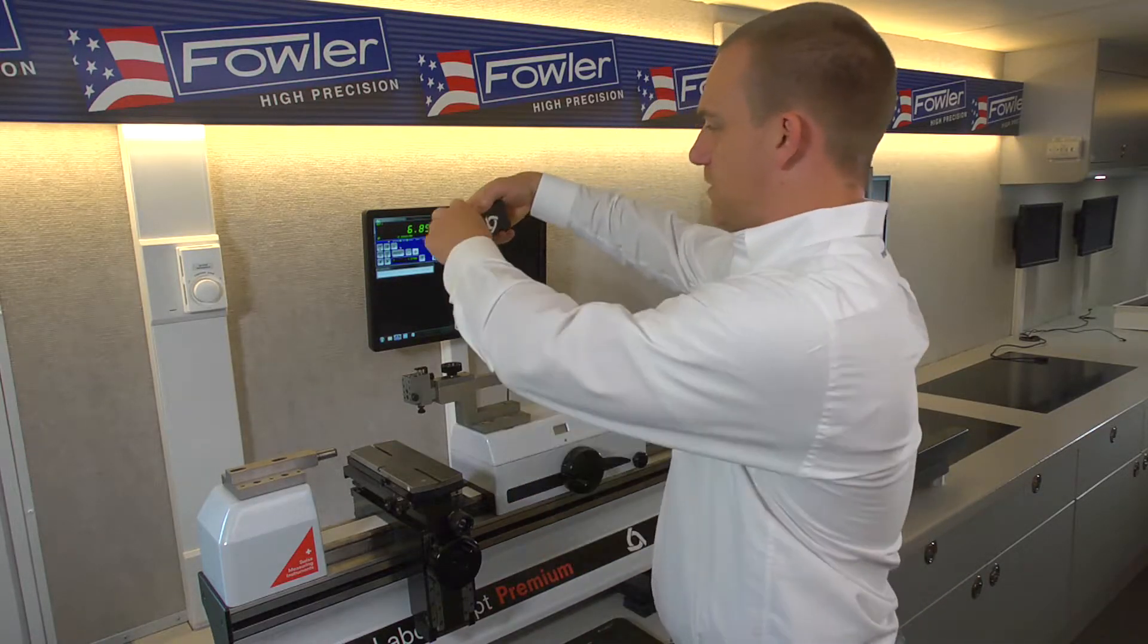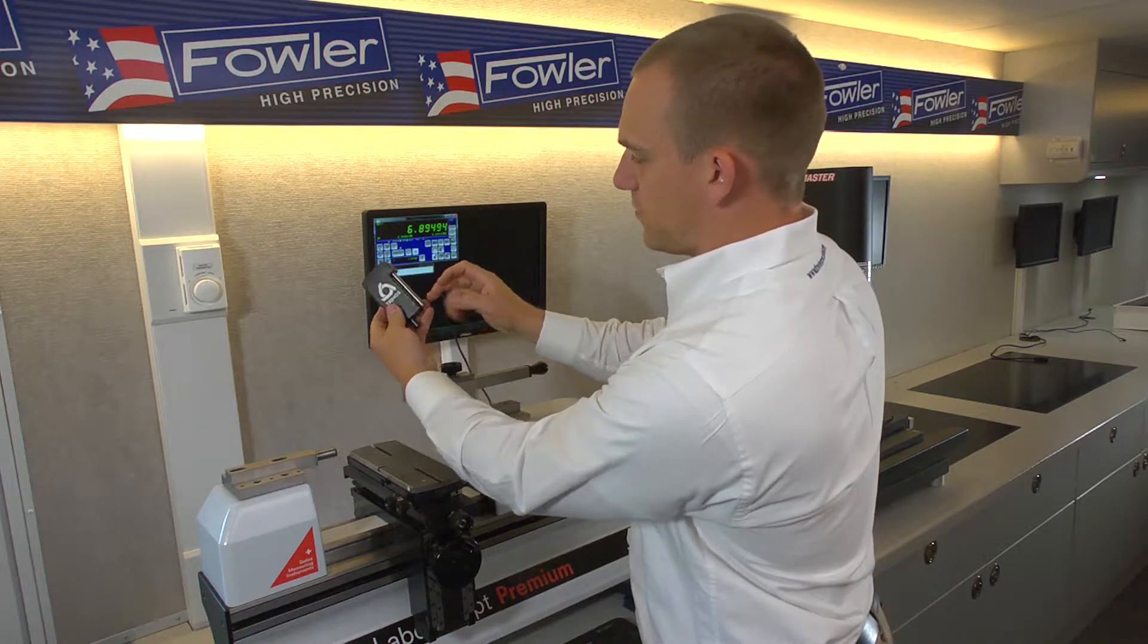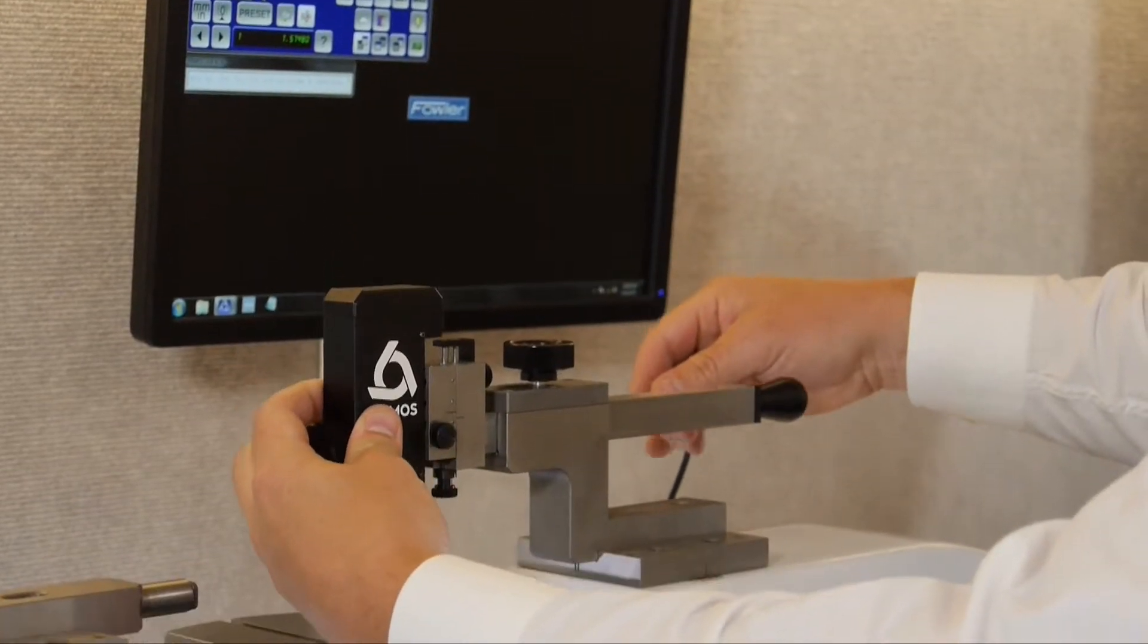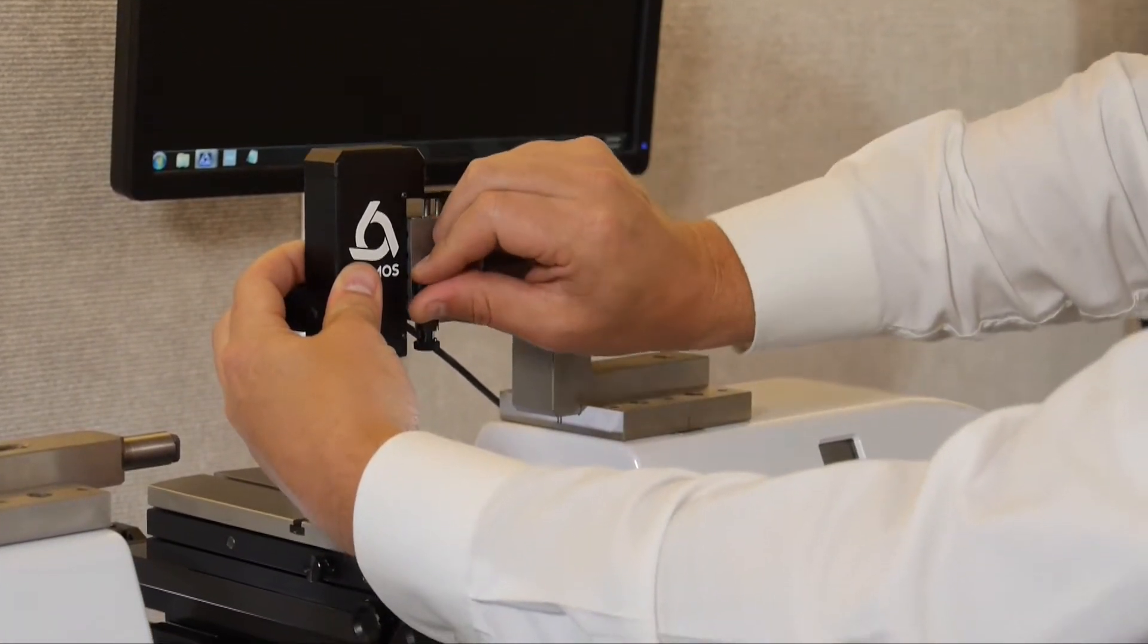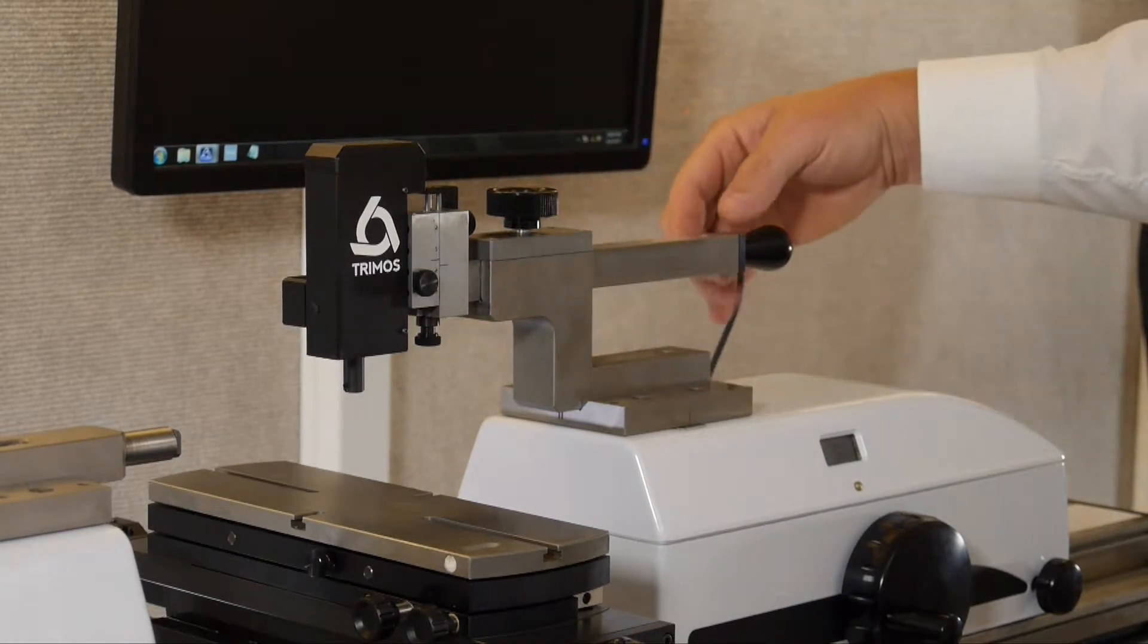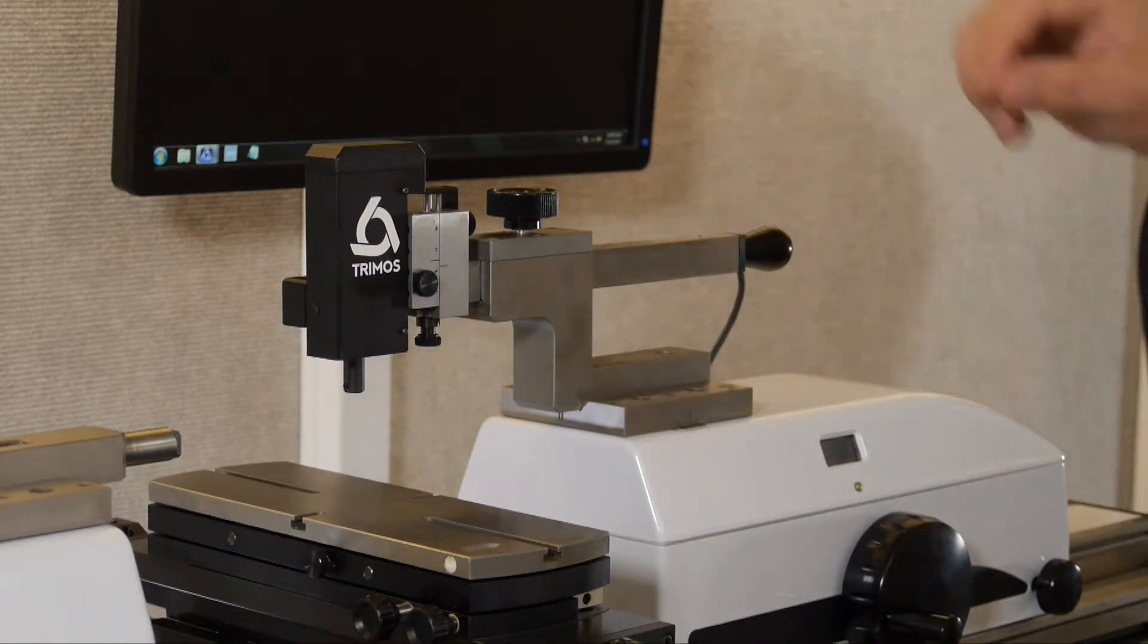Next, we will mount the measuring head, which mounts via this post on the right side. So that just slots in. And then there is a thumb screw here to lock that in place. The cable can then come and snap into a little clip right here to keep it up and out of the way.